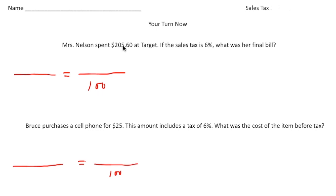So the $205.60, that's going to go across from 100. So this is going to be 205.60. And because the sales tax is 6%, we need to add that to our 100%. So this is going to be 106 here. And over here is going to be the amount that includes the tax.